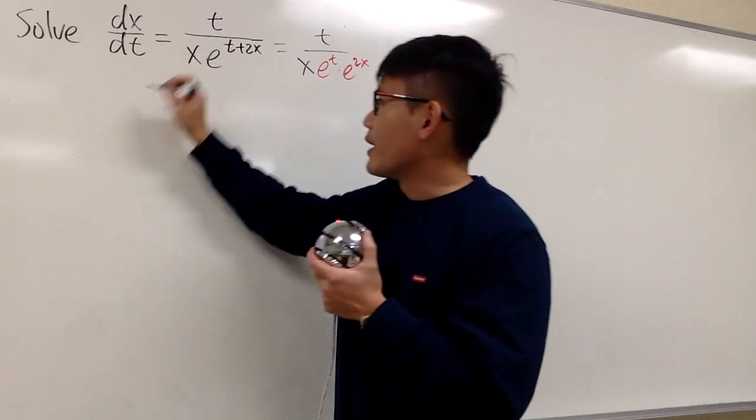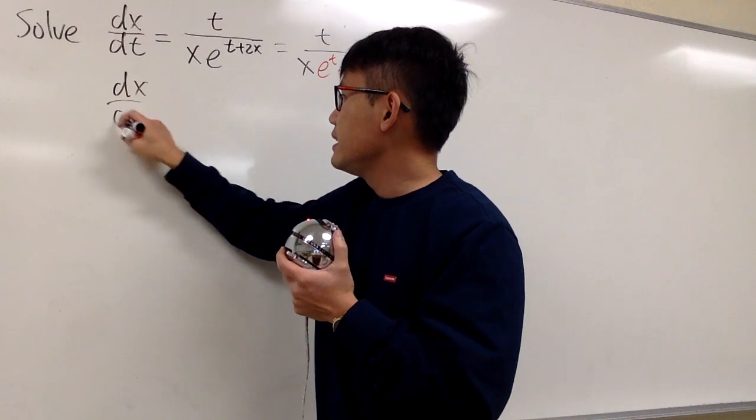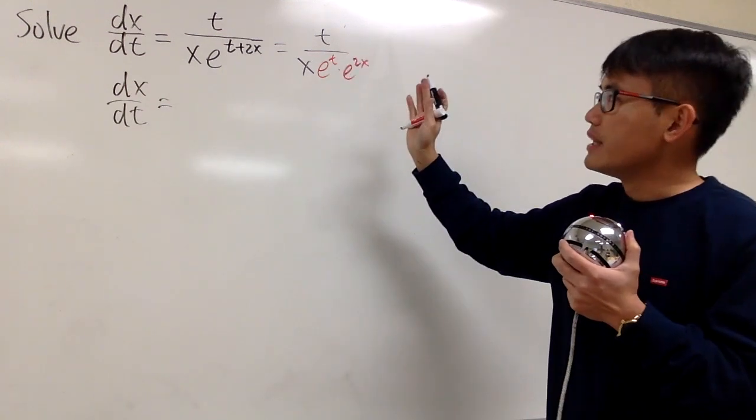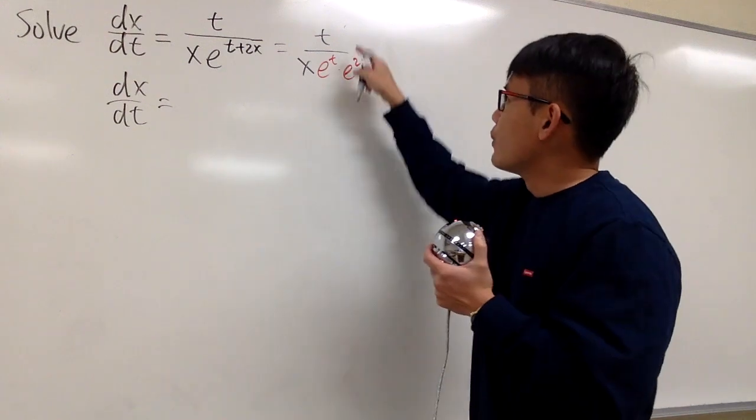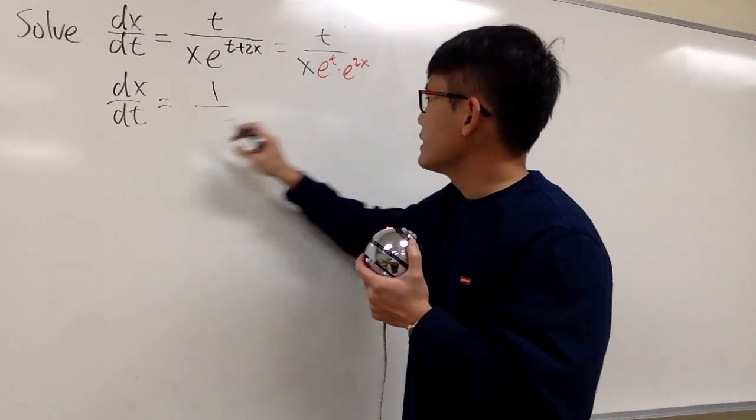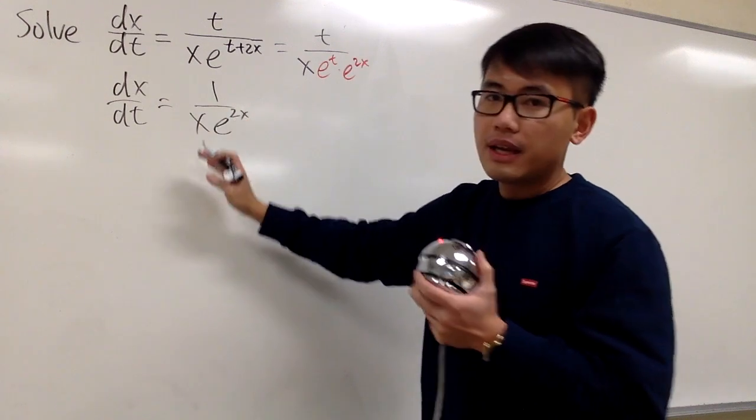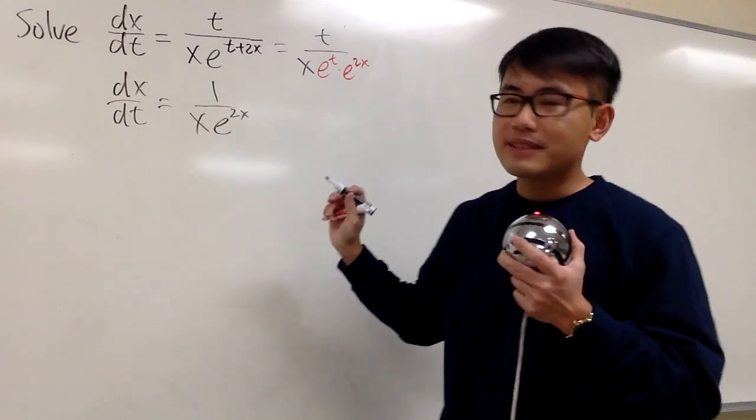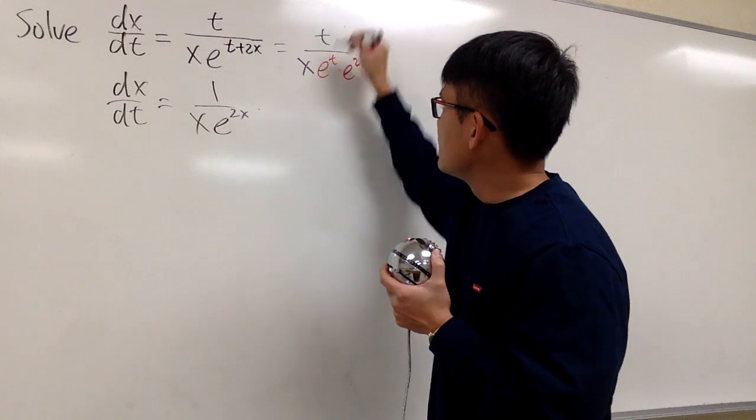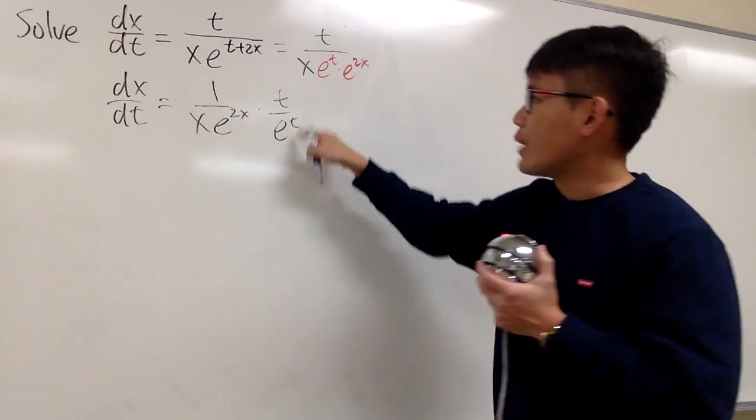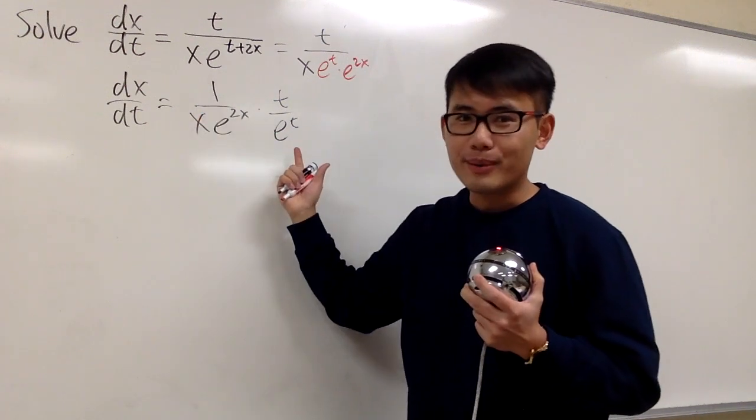So let me write this down. We have dx/dt is equal to, let me just put down all the x together first. So we will have 1 over x, and then e to the 2x together like this. And this is a function of x. And then we multiply by t on the top over e to the t on the side. So you see, it is separable.